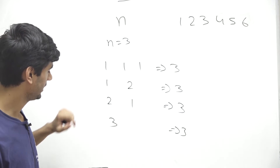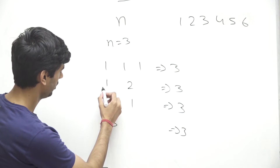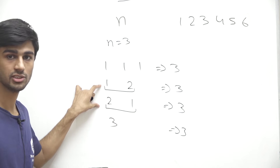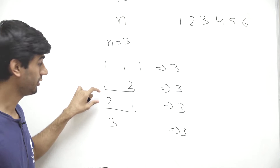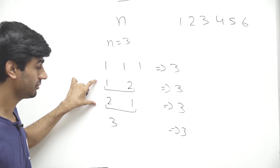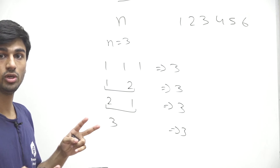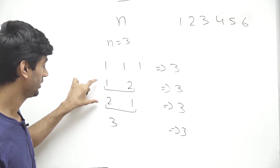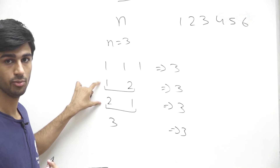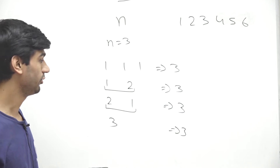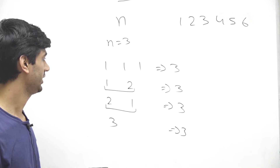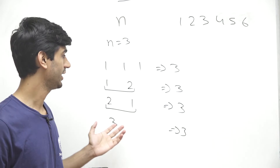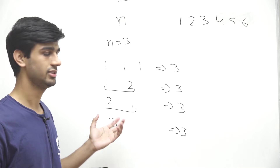We can see that {1,2} and {2,1} are permutations of each other, but we have to count them as two different ways. So we will be counting distinct permutations as different.